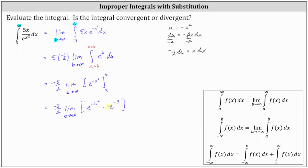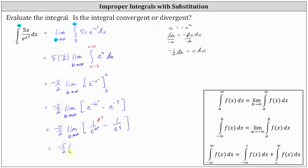Let's rewrite this using positive exponents before we determine the limit. We have negative five-halves times the limit as b approaches infinity of one divided by e to the power of b squared, minus one divided by e to the ninth. As b approaches infinity, one divided by e to the power of b squared approaches zero because the denominator is increasing without bound and the numerator stays at one. So one divided by e to the b squared approaches zero, and one divided by e to the ninth is not affected by b. Therefore we have negative five-halves times negative one divided by e to the ninth, which equals positive five divided by two e to the ninth.